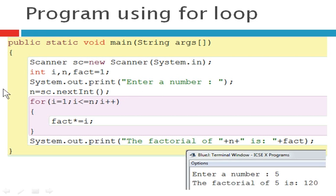Next we are going to see a factorial program. You will see some variables: i is the control variable, N is the value entered by the user to identify how many times to execute the loop, and fact is the variable to store the factorial result. The factorial of 5, for example, multiplies the numbers from 1 through 5: 1 × 2 × 3 × 4 × 5. It multiplies all the numbers in order until it reaches 5, and that product is the factorial of the given number.